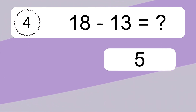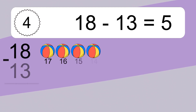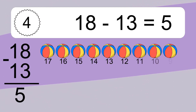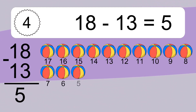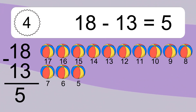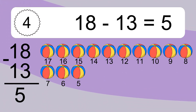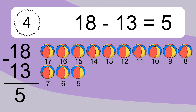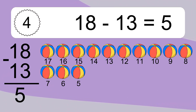18 minus 13 equals what? 18 minus 13 equals 5. Let's count it: 17, 16, 15, 14, 13, 12, 11, 10, 9, 8, 7, 6, 5.